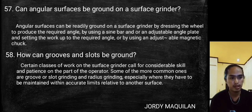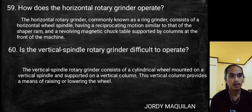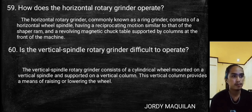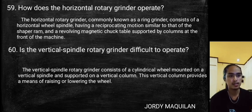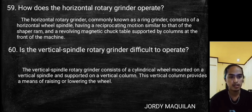How does the horizontal rotary grinder operate? The horizontal rotary grinder, commonly known as a ring grinder, consists of a horizontal wheel spindle having a reciprocating motion similar to that of a shaper ram, and a revolving magnetic chuck table supported by columns at the front of the machine. The vertical spindle rotary grinder consists of a cylindrical wheel mounted on a vertical spindle and supported on a vertical column, which provides a means of raising or lowering the wheel.